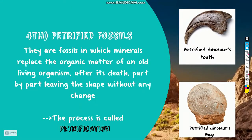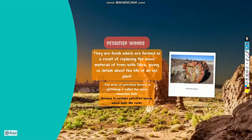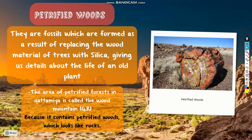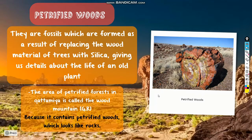Another example of petrified fossils is petrified wood. These are fossils formed as a result of replacing the wood material of trees with silica, giving us details about the life of an old plant. The area of petrified forests in Qatamiya is called Wood Mountain, because it contains petrified wood that looks like rocks but is actually wood.